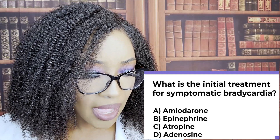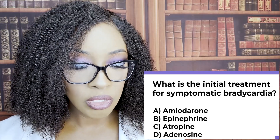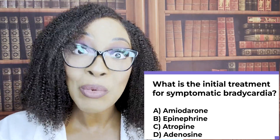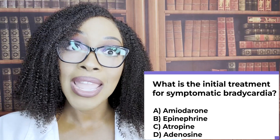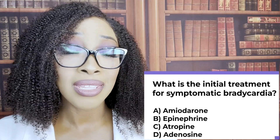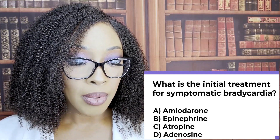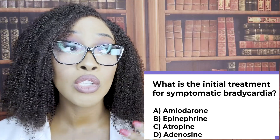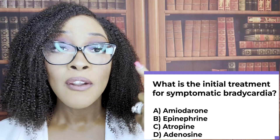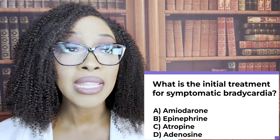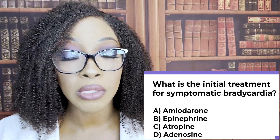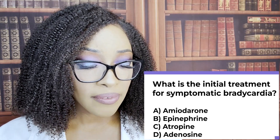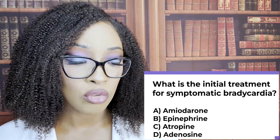For the other options: amiodarone is given for ventricular arrhythmias. Epinephrine — if atropine wasn't an option, we would choose epinephrine for symptomatic bradycardia; it's our second-line go-to after atropine. Both AANC and AANP are very big on first-line treatment, so whenever you see that phrase in your textbook, highlight it — you need to know it. Adenosine is given for SVT — supraventricular tachycardia.